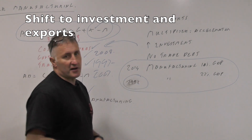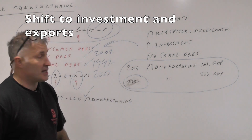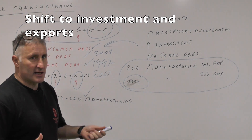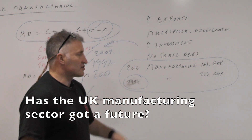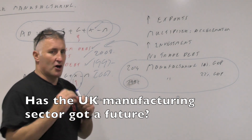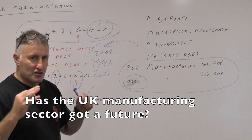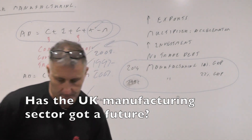However, this is very difficult because in 2014 manufacturing as a percentage of GDP is now 10%, whereas in 1992 it was 22% of GDP. So really the whole of this research assignment is: has the UK manufacturing sector got a future?